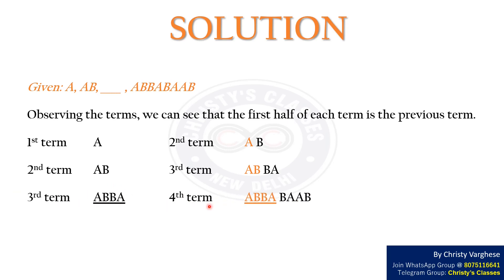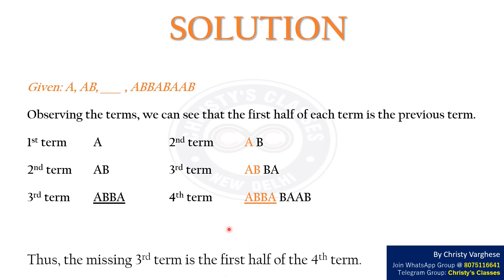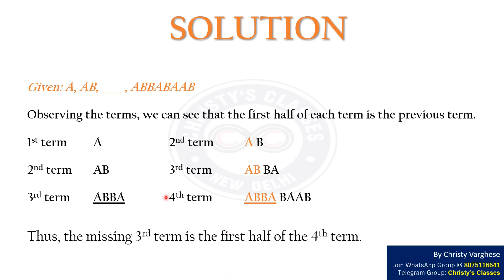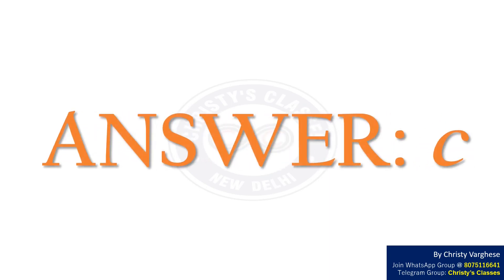The fourth term is ABBABAAB. Thus, the missing third term is the first half of the fourth term, i.e., ABBA. Hence, the right answer to the question is option C, ABBA.